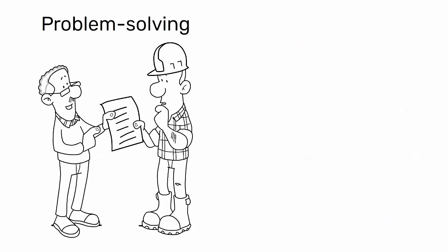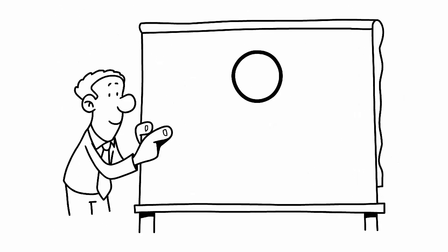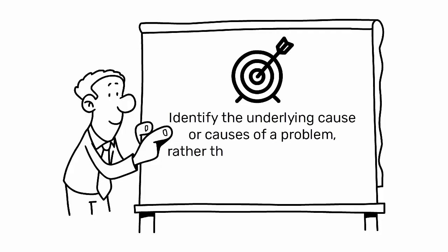It is a fundamental aspect of problem solving in industrial engineering and is crucial for implementing effective solutions. The primary objective of RCA is to identify the underlying cause or causes of a problem rather than simply addressing the immediate symptoms.